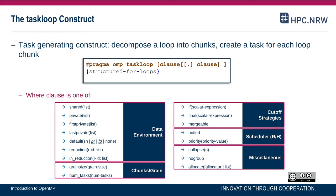While with the worksharing construct — the for worksharing construct or the do equivalent in Fortran — it's not possible to include another worksharing construct. Task parallelism provides more opportunities to compose or to nest parallelism, to write parallel composable software.